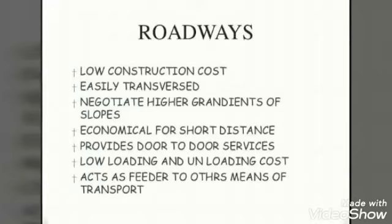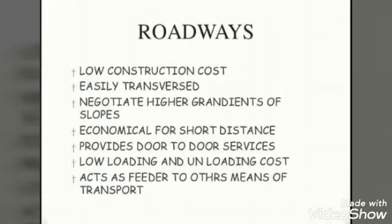Roads can negotiate higher gradients of slopes and as such can traverse mountains like the Himalayas. Even if an area is not wide, a road could be constructed. For example, if you have to go towards Mussoorie, roads are easily constructed there, but you cannot lay down railway lines — that is not possible. So this advantage is only with roadways.